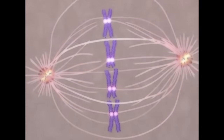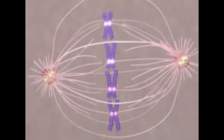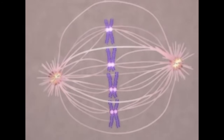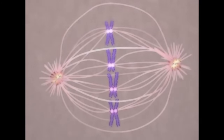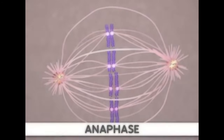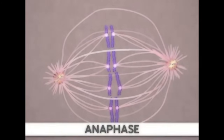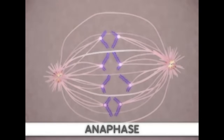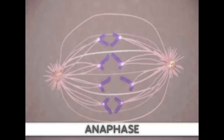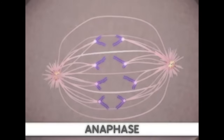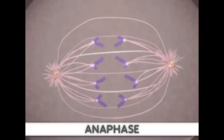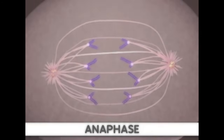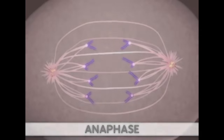Separation occurs during anaphase through a shortening of the microtubules attached to the kinetochores. Additionally, the poles of the cell move farther apart, causing increased separation of sister chromatids. At the end of anaphase, the sister chromatids have moved to the two ends of the cell.